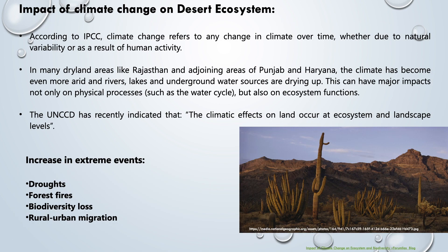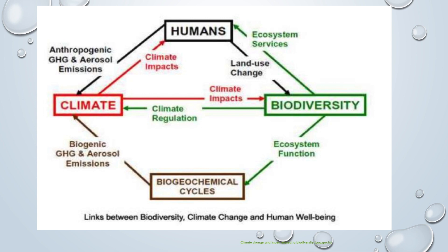Impact of climate change on desert ecosystems: According to the IPCC, climate change refers to any change in climate over time, whether due to natural variability or as a result of human activity. In many dryland areas like Rajasthan and adjoining areas of Punjab and Haryana, the climate has become even more arid and rivers, lakes, and underground water sources are drying up. This can have major impact not only on physical processes but also on ecosystem function. The UNCCD has indicated that climatic effects on land occur at ecosystem and landscape level, including increases in extreme events, drought, forest fire, biodiversity loss, and rural-urban migration. A flow chart shows the link between biodiversity, climate change, and human well-being.